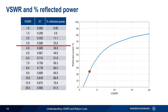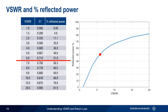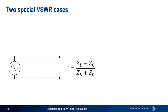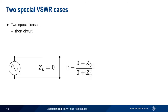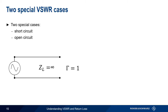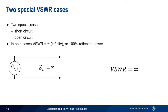The percentage of reflected power increases dramatically as VSWR increases further. At a VSWR of 6, only about half of the forward power is absorbed by the load, and the remainder is reflected back to the source. At VSWR equals 10, two-thirds of the forward power is being reflected back. There are two special cases worth discussing. For a short circuit, load impedance equals 0 and gamma equals minus 1. For an open circuit, load impedance is infinite and gamma equals 1. Plugging either value into the VSWR equation gives a VSWR of infinity, meaning 100% of the forward power is reflected back towards the source.